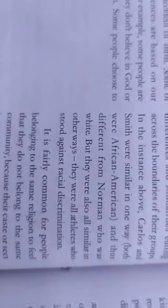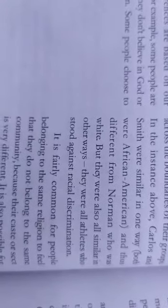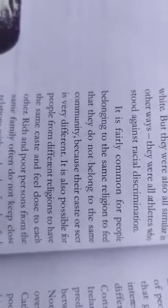Even if there are boundaries between groups, there are differences and similarities within a group. Carlos and Smith were two Americans, and Peter Norman was an Australian. Despite coming from different countries, there were some similarities between them. The second similarity is that they were all speaking out against racial discrimination in the world — this is a fairly common story of people coming together across group lines.